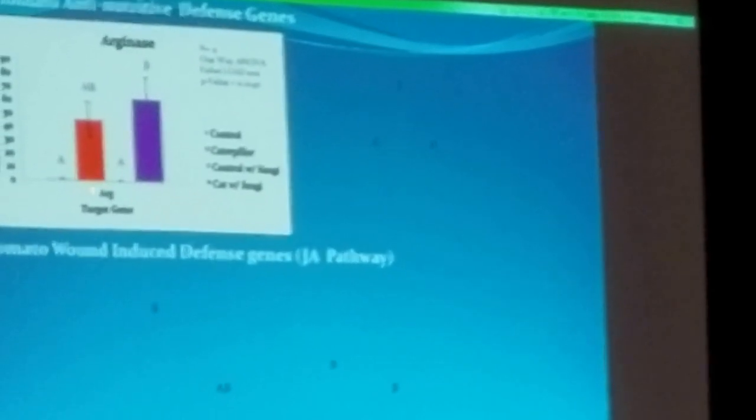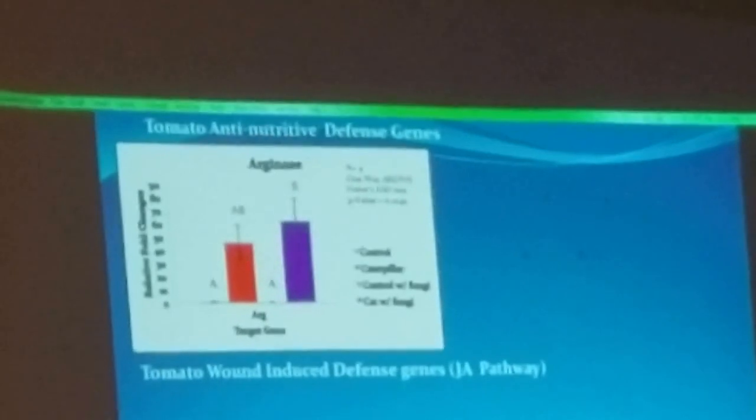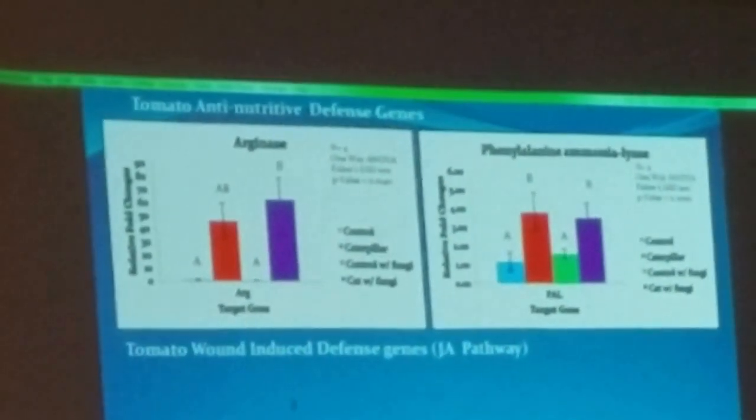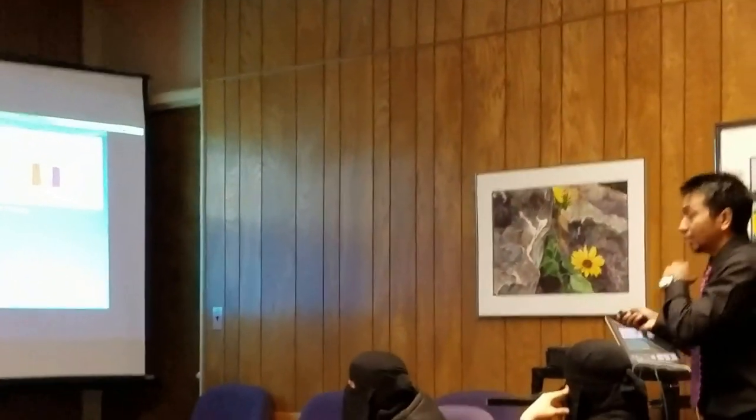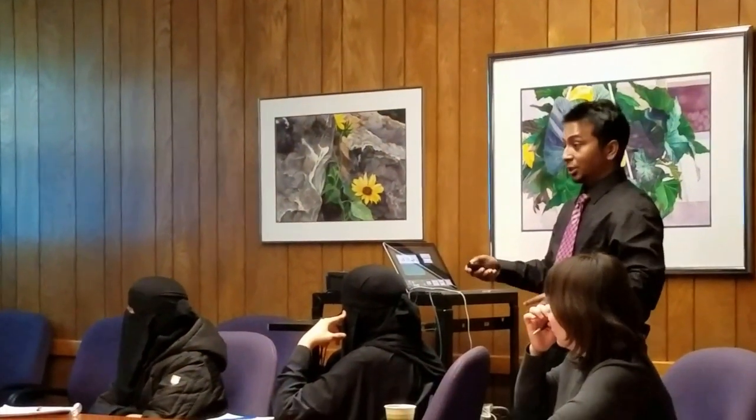Now let's move to arginase. As the name implies, arginase breaks down the arginine amino acid, and then the caterpillar will suffer from nutrition deprivation. Here is a different trend — the fungi is actually up-regulating this gene expression. Here, phenylalanine ammonia lyase does the enzymatic removal of phenylalanine, so the caterpillar again suffers from some nutritional deficiency and will not want to eat that plant anymore. Here, a little down-regulation in the presence of fungi compared to caterpillar alone.